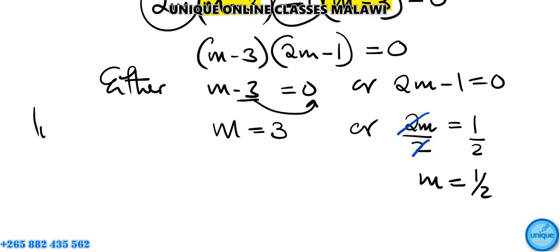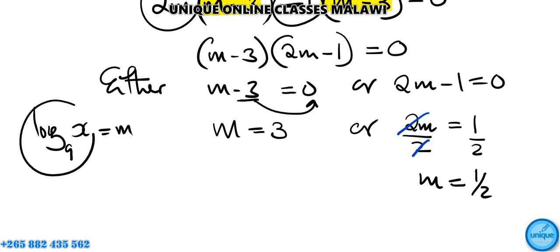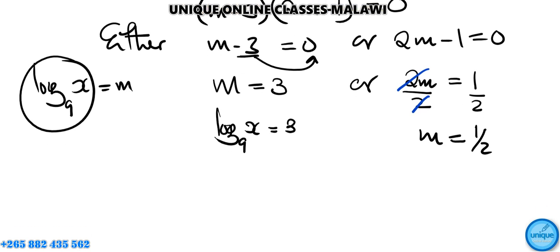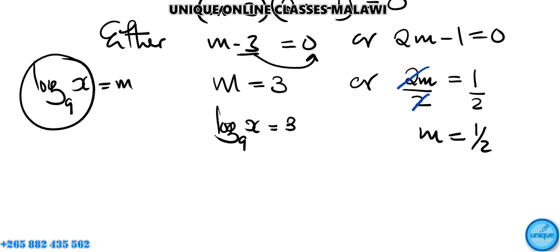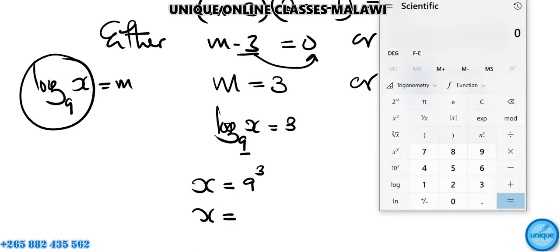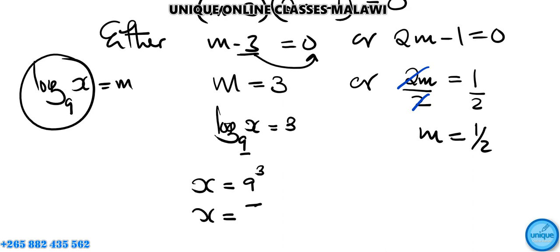Going back to our substitution, if log base 9 of x equals 3, we convert to exponential form: x equals 9 to the power 3, which is 9 times 9 times 9, giving x equals 729.